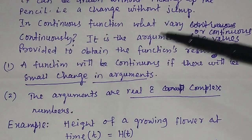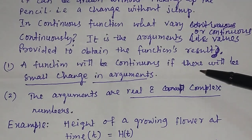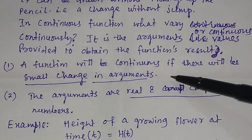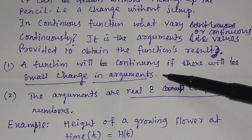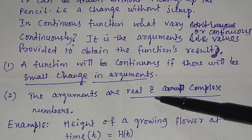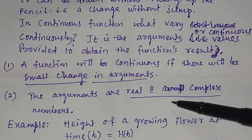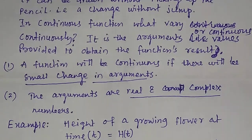You should remember these two points about continuous functions. The first point is: a function will be continuous if there is a small change in arguments. And number two, the arguments are real and complex numbers.